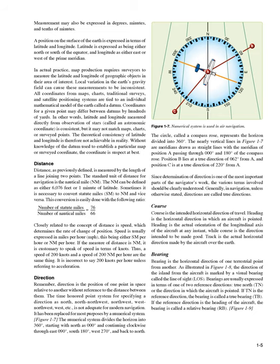Distance. The standard unit of distance for navigation is the nautical mile (Nm), defined as either 6,076 feet or 1 minute of latitude. To convert statute miles (Sm) to Nm and vice versa, use the ratio: number of statute miles equals 76/66 times the number of nautical miles. Closely related to distance is speed, which determines the rate of change of position. Speed is usually expressed in miles per hour. If the measure of distance is Nm, it is customary to speak of speed in terms of knots. A speed of 200 knots and a speed of 200 nautical miles per hour are the same thing. It is incorrect to say 200 knots per hour unless referring to acceleration.